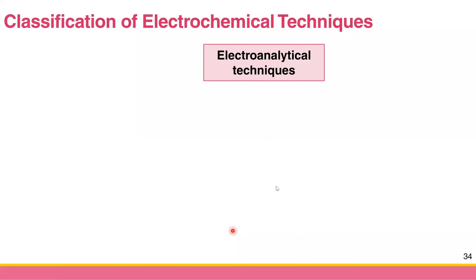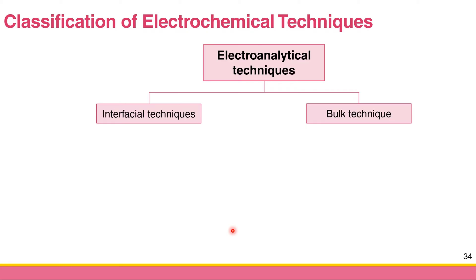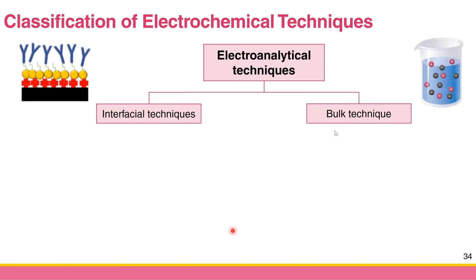Based on the pink diagram, starting from electro-analytical techniques, we can classify them into interfacial techniques and bulk techniques. The interfacial technique measures things that occur at the electrode interface. The bulk technique measures the properties of the whole bulk solution. The only technique under the bulk category is conductometry, which measures the conductivity of the solution.